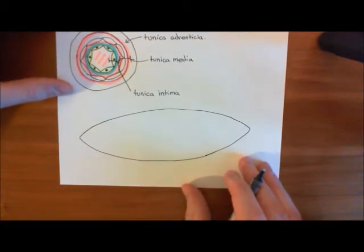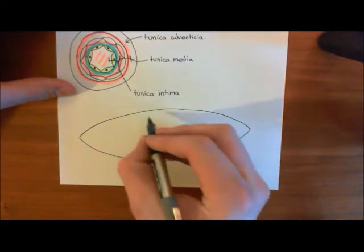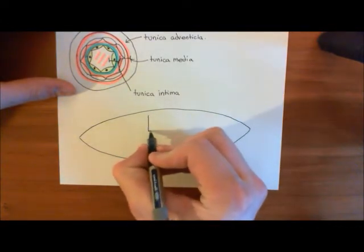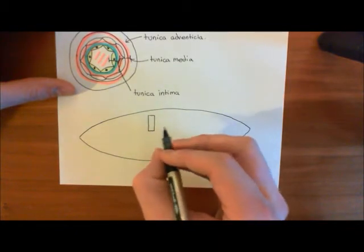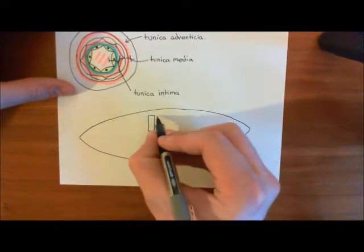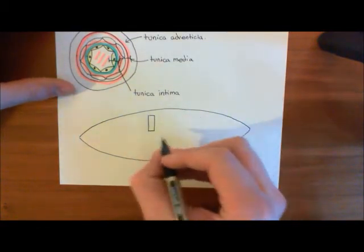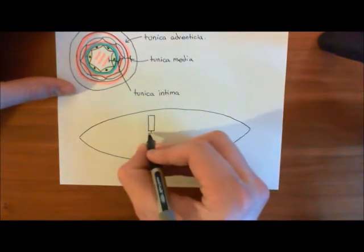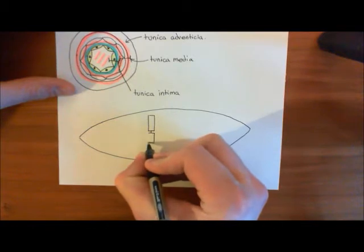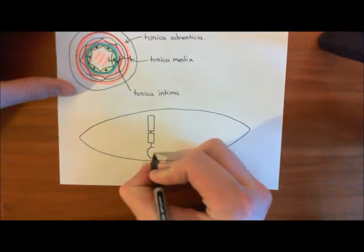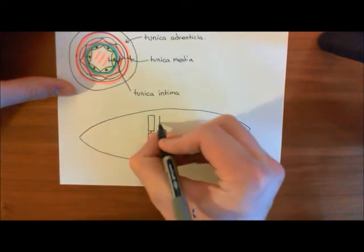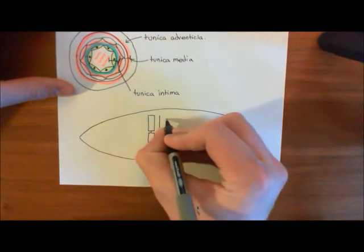there are soluble guanylate cyclase enzymes. Okay, so we'll draw our soluble guanylate cyclase enzyme here. Let me draw it in full, actually. So here is our soluble guanylate cyclase enzyme. It consists of two subunits, an alpha subunit and a beta subunit. So, on the left,